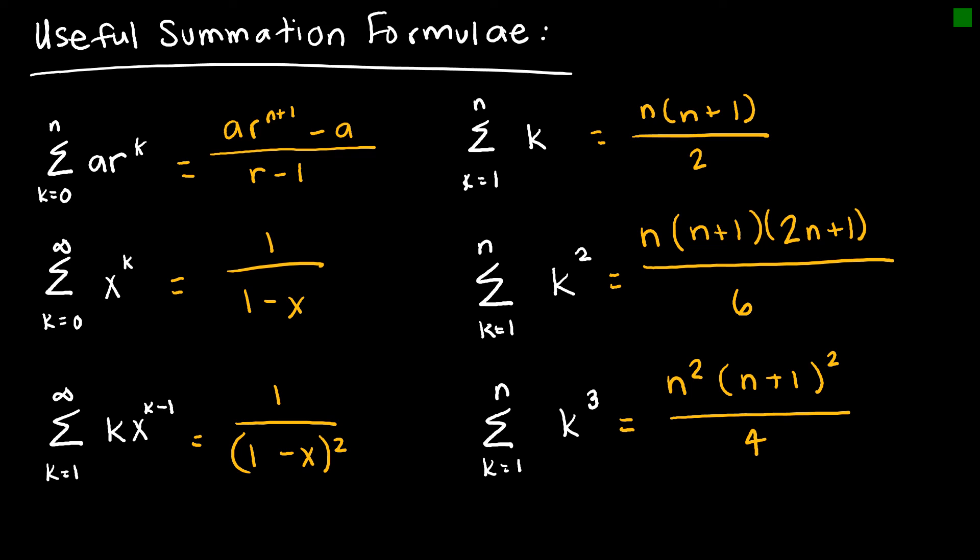Here is a summary slide of the different summation formulas we might be using. We talked about the geometric progression formula and the sum of k and k squared. Notice there are several on here that we haven't talked about — they're still very useful formulas. If you continue on to combinatorics, we'll use all of these. But I wanted to go through the ones we use most often in this course.